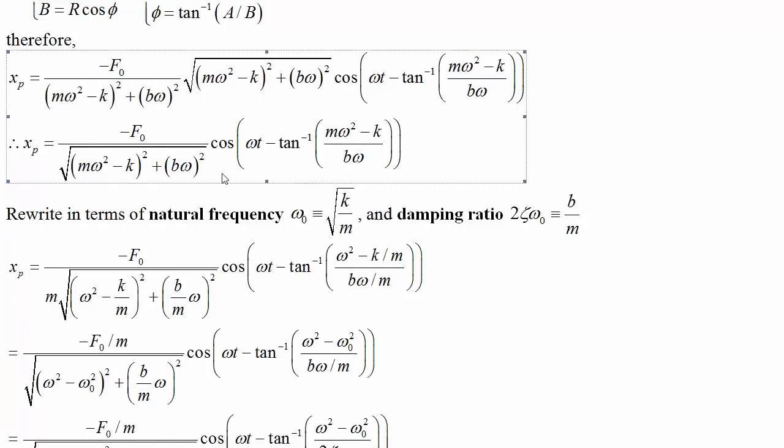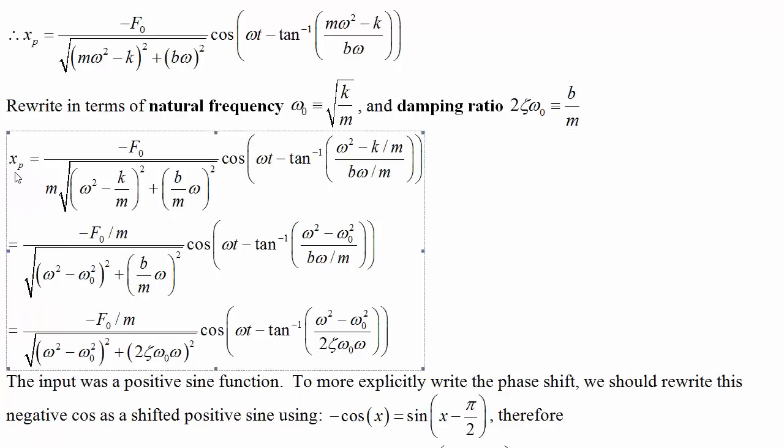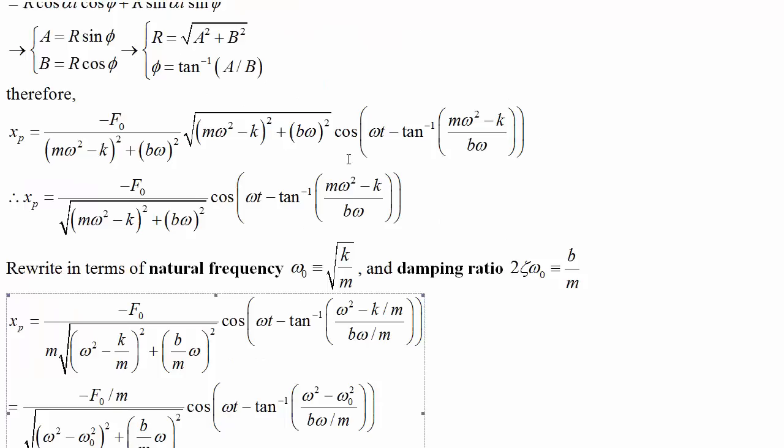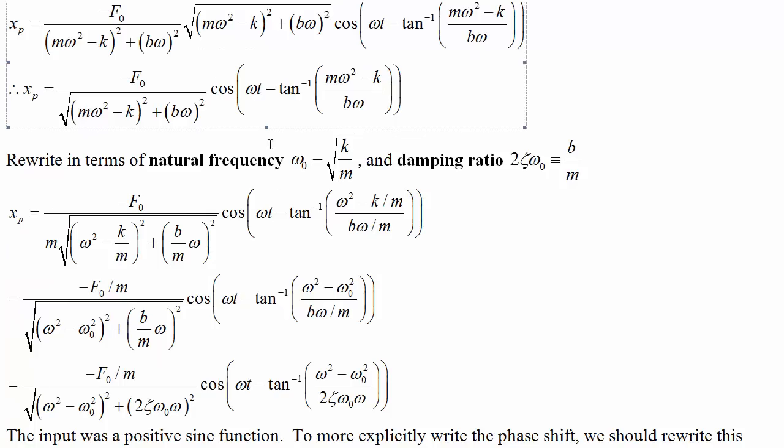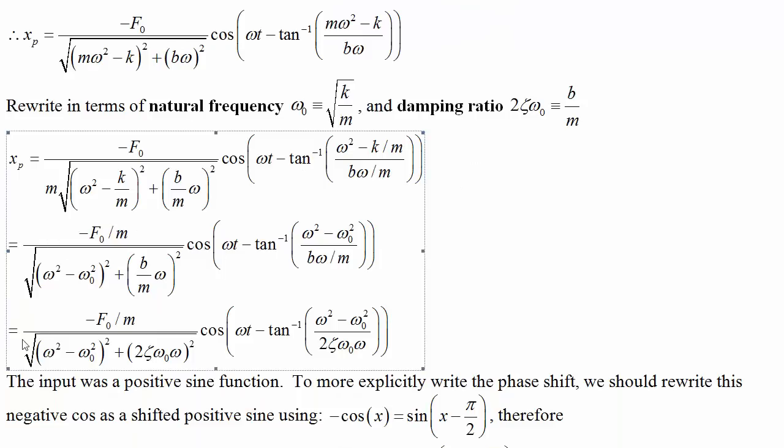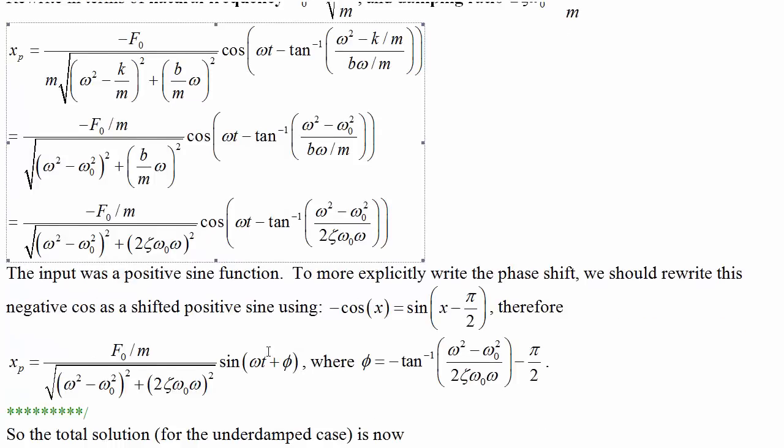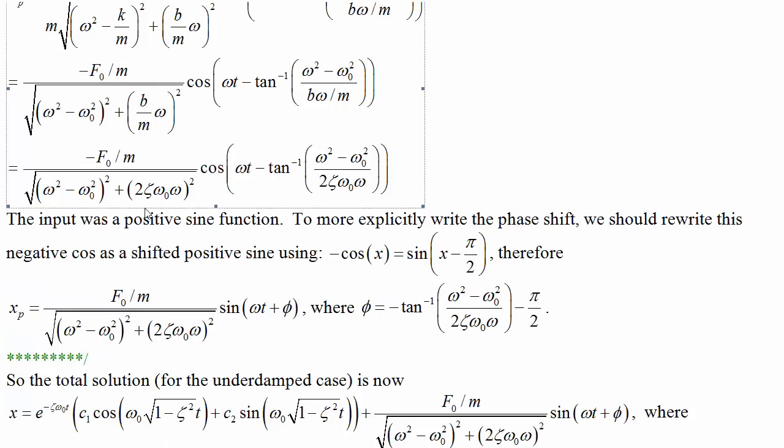Now, if we take this and rewrite in terms of the natural frequency ω₀ and the damping ratio ζ, then xp is -F₀/m divided by this square root term, cosine of ωt with a phase shift. The input was a positive sine function. To more explicitly write the phase shift, we may want to rewrite this in terms of sine by using the fact that negative cos is sine of x - π/2.